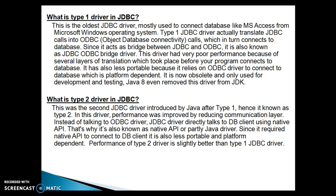The Type 2 driver was the second JDBC driver introduced after Type 1. In this driver, performance was improved by reducing communication layers — instead of talking to the ODBC driver, the JDBC driver directly talks to the database client using native APIs. That is why it is also known as the Native API or partly Java driver. Since it requires native APIs to connect to the database client, it is also less portable and platform dependent. The performance of the Type 2 driver is slightly better than the Type 1 driver.